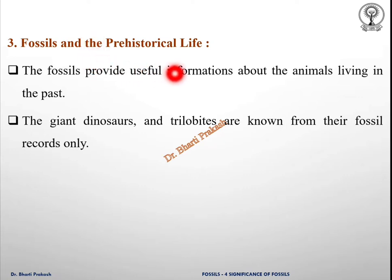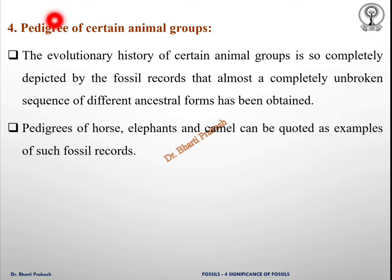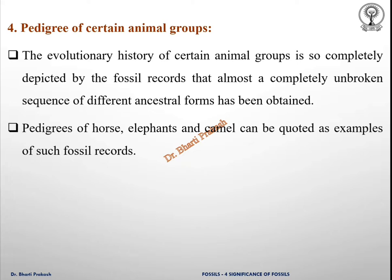Fossils also provide information about pre-historical life. They provide useful information about animals living in the past; the giant dinosaurs and the trilobites are known from their fossil records only. Another significance is the pedigree of certain animal groups. The evolutionary history of certain animal groups is so completely depicted by fossil records that an almost unbroken sequence of different ancestral forms has been obtained. Pedigrees of horses, elephants, and camels can be quoted as examples of such fossil records.